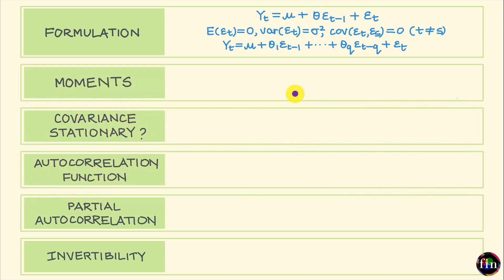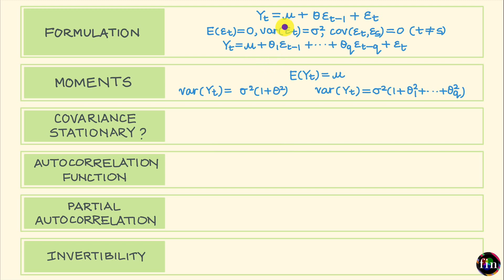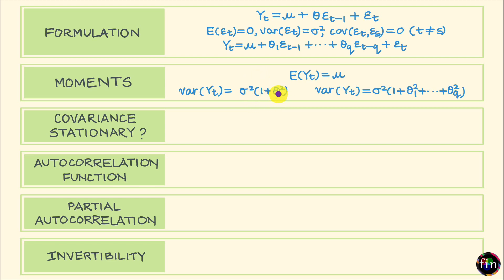Let's now look at the first two moments of Yt — the mean and the variance — when Yt follows a moving average model. For MA1, based on the model specification and the fact that the epsilons have zero mean, the expected value of Yt is simply equal to mu. Since the epsilons have the same variance sigma squared and zero covariance, the variance of Yt under the MA1 process is theta squared times sigma squared plus sigma squared, which simplifies to sigma squared times (1 plus theta squared).